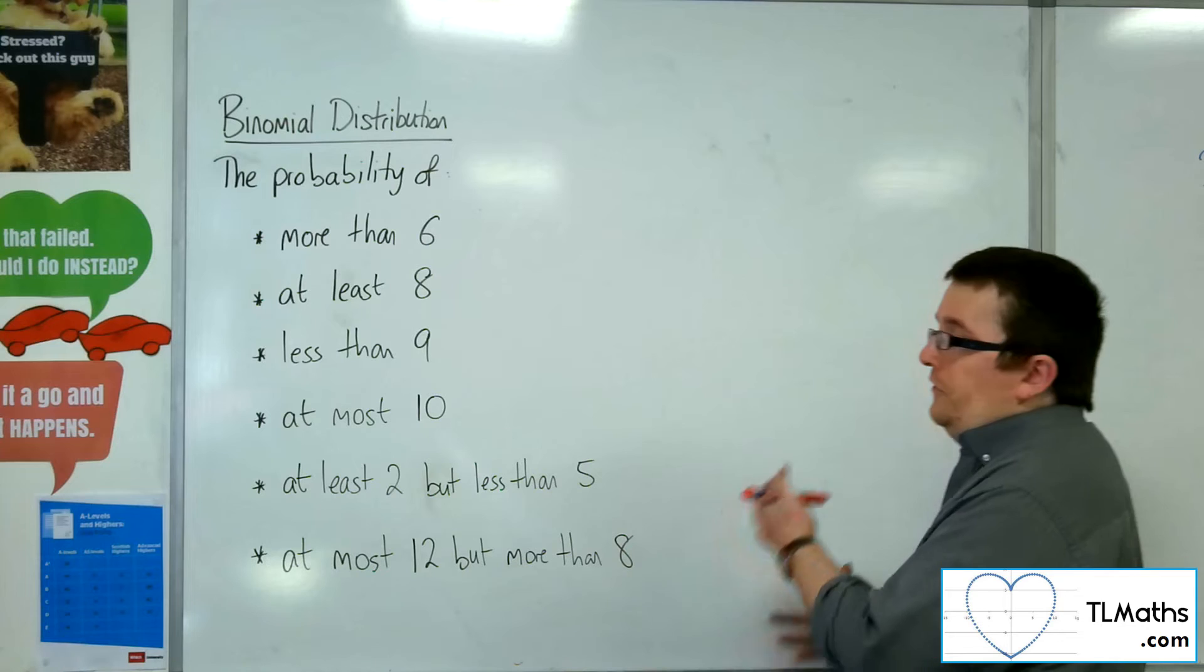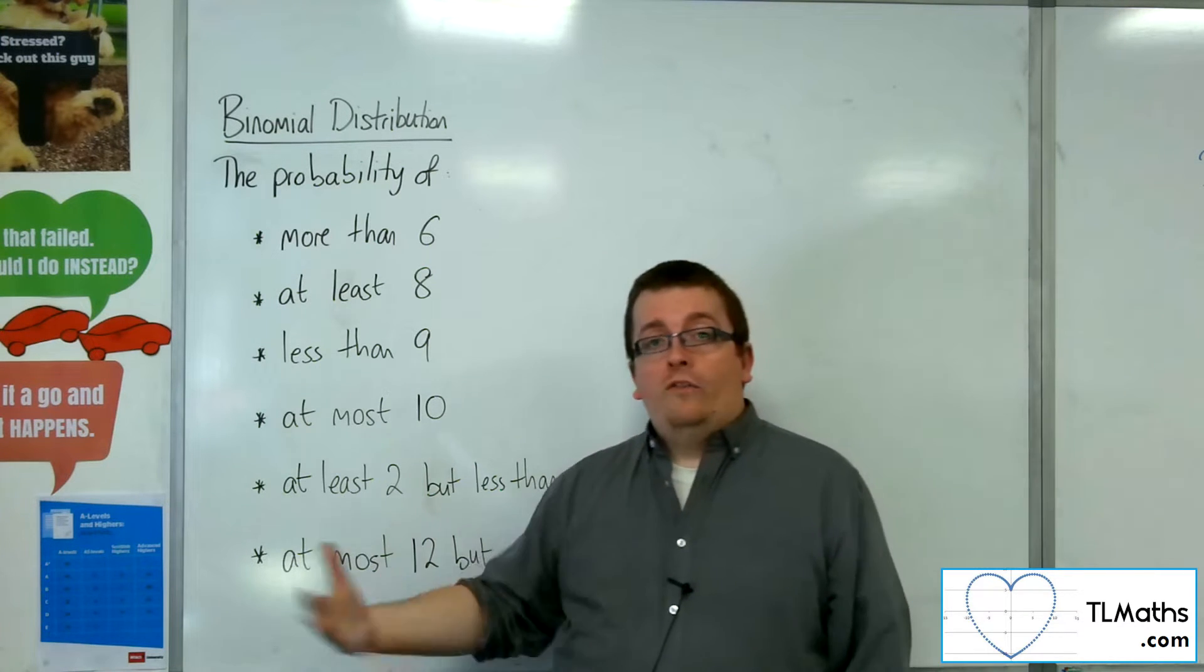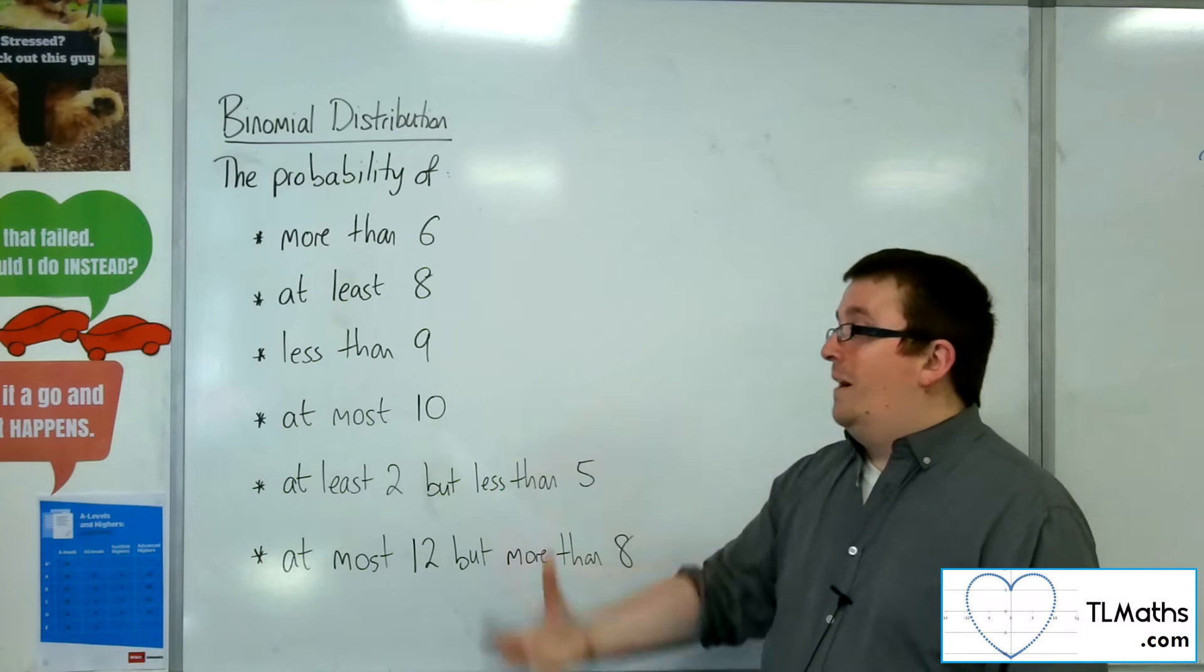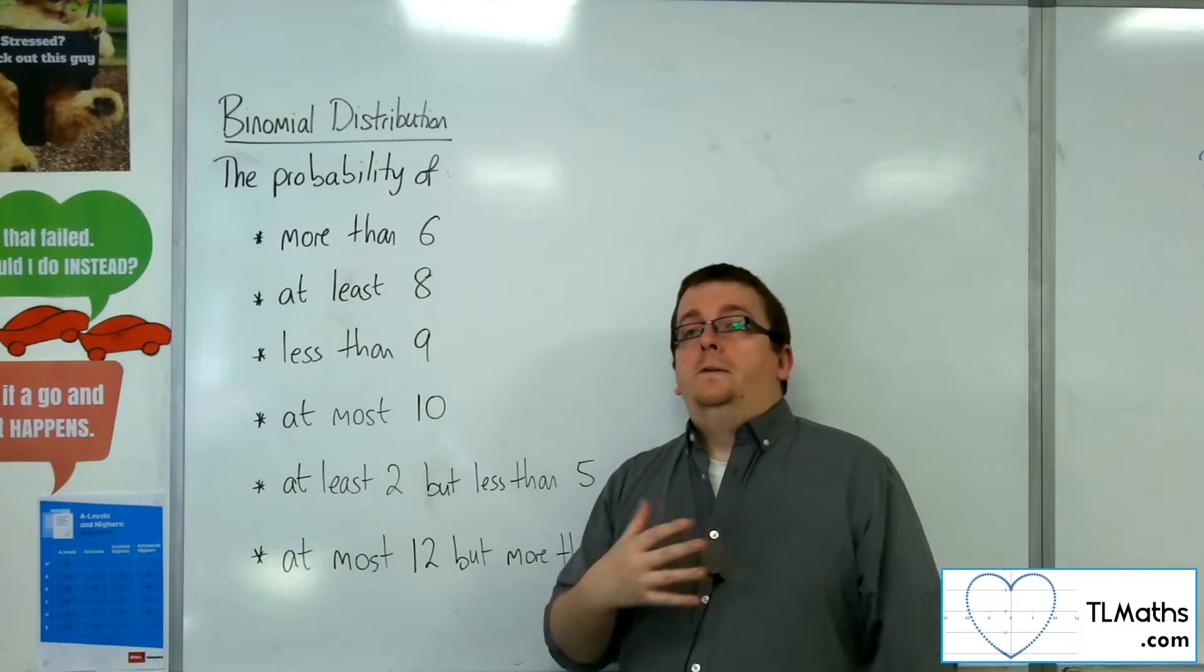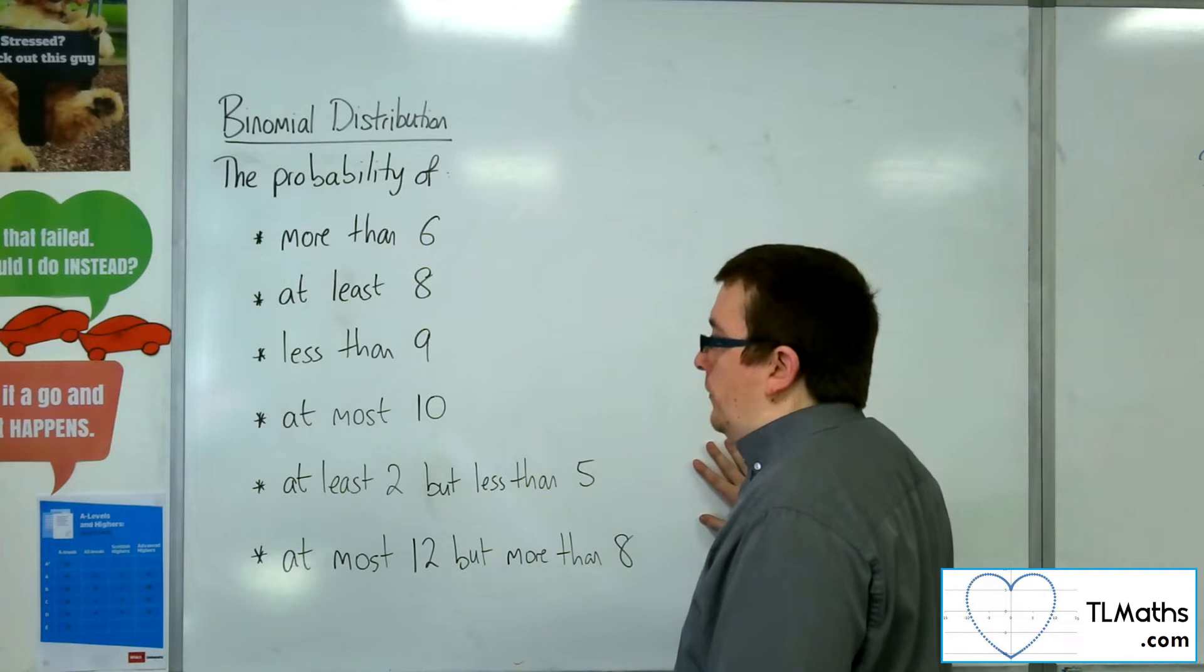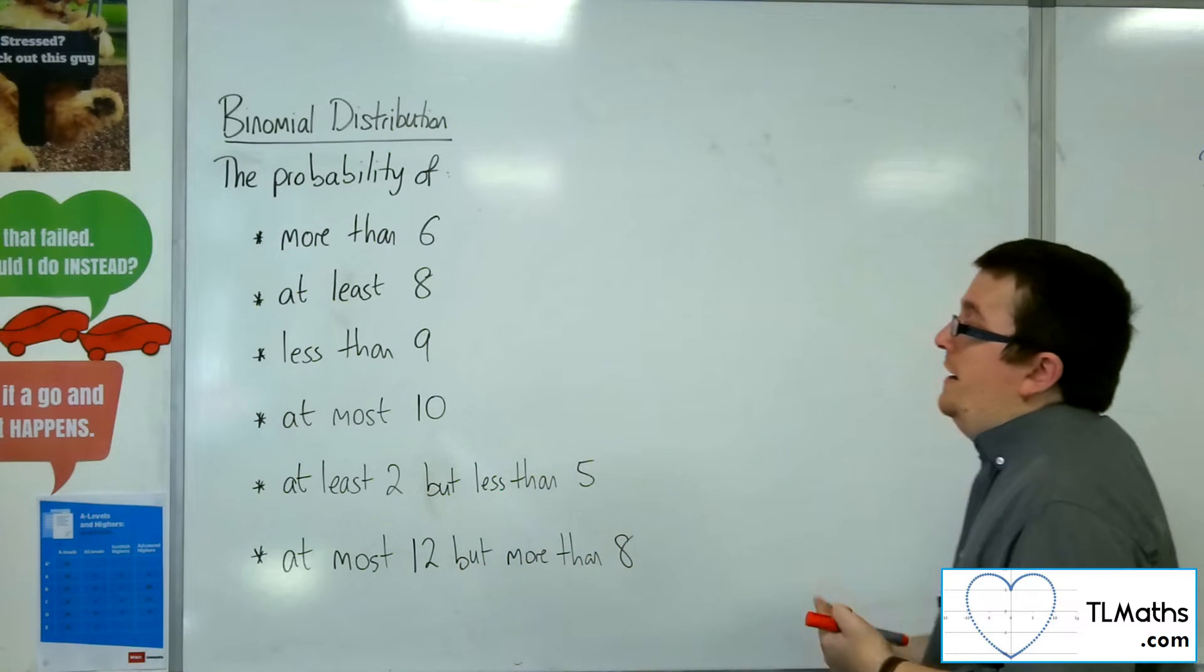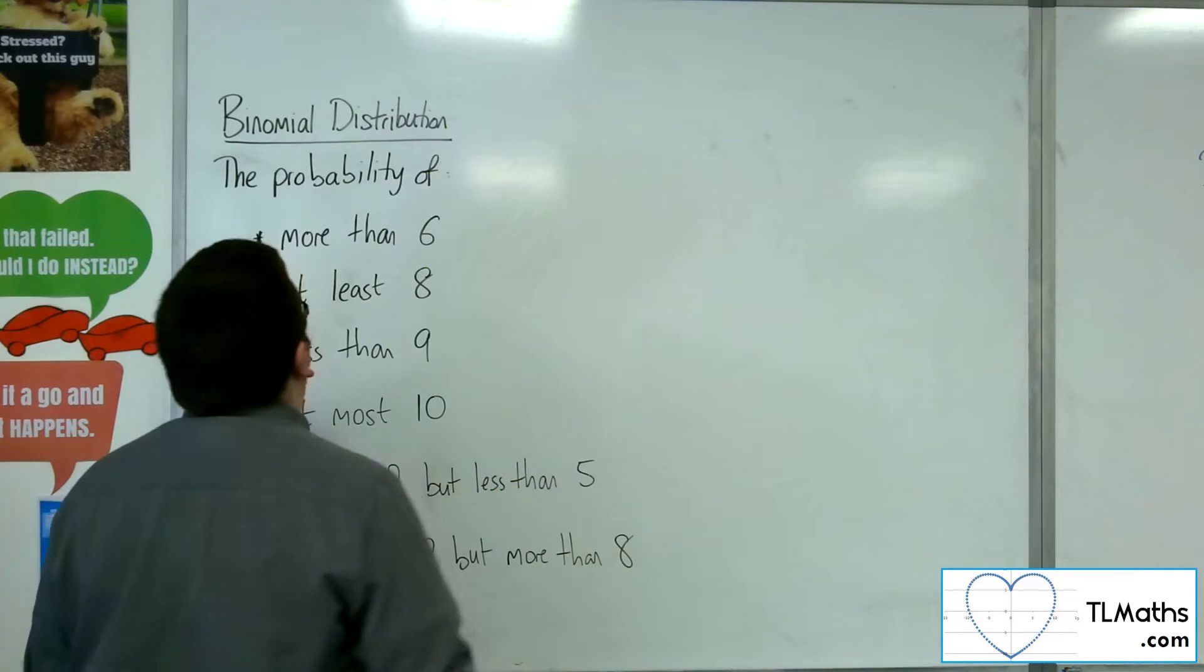And the kind of words they're going to be using are: what's the probability of getting more than so-and-so, or at least, or less than, or at most, and really or between two particular values. And you need to be able to interpret what does that mean. So I'm going to write each of these in probability notation so you can really see and identify what these are really asking for.